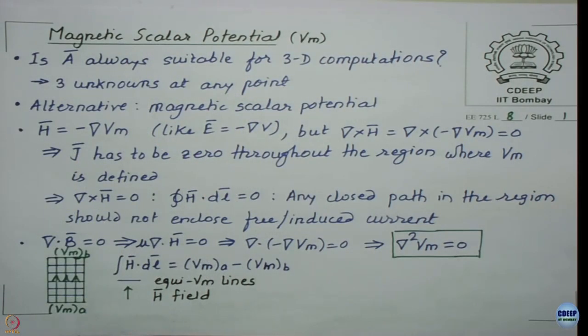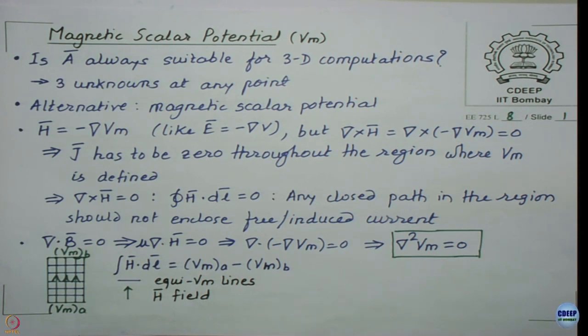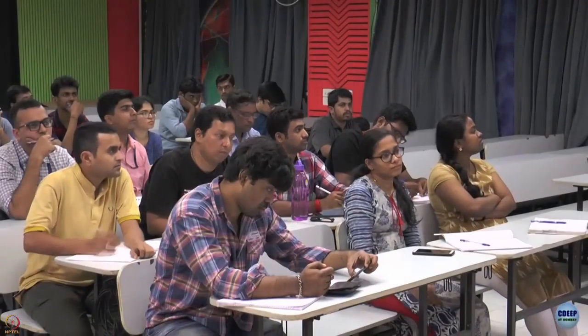The first question being asked here is: is A always suitable for 3D computations? When you are doing 3-dimensional field computations, at any point in space you have three unknowns — AX, AY, and AZ — so computations become a little bit cumbersome for large 3D problems. It would be useful to have a scalar potential in magnetics, because then there will be only one unknown at a point. That is why magnetic scalar potential was coined by earlier researchers as an alternative to magnetic vector potential, but there are some limitations — which we will see.